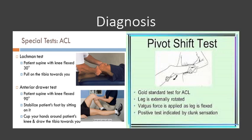For diagnosis, once we suspect ACL is torn, we generally use three special tests. The pivot shift test is the gold standard test for ACL — the leg is externally rotated, valgus force is applied as the leg is flexed, and a positive test is indicated by a clunk or pop sensation. For the Lachman test, the patient lies supine with the knee flexed to 30 degrees; you stabilize the femur and pull the tibia towards you, comparing the affected knee to the unaffected side.